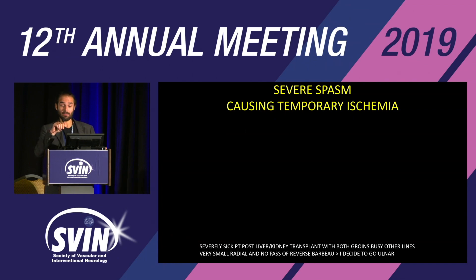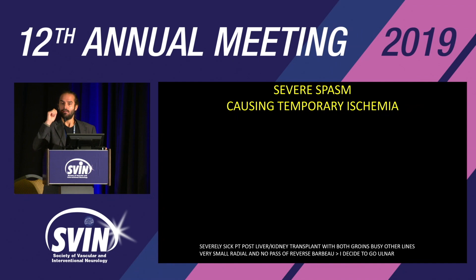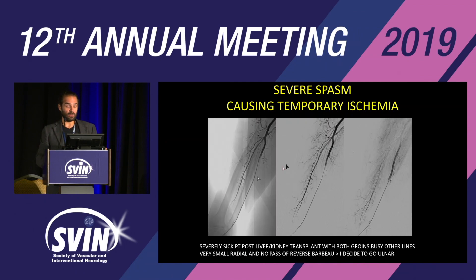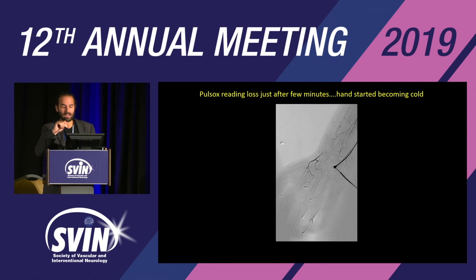This is a case of severe spasm that caused temporary ischemia. It was a severely sick patient, post double transplant — liver and kidney — so both groins were busy with other lines. This was a good radial case, but the radial artery was extremely small. I did a reverse Barbeau test; it didn't pass. Given the risk of accessing those groins, I decided to go ulnar anyway. After a few minutes, the hand started becoming cold and we lost the pulse ox reading. I did an angiogram through the hand — essentially there was no filling of the ulnar side of the hand. In this case, you want the pulse oximeter on the ulnar side, not on the thumb.